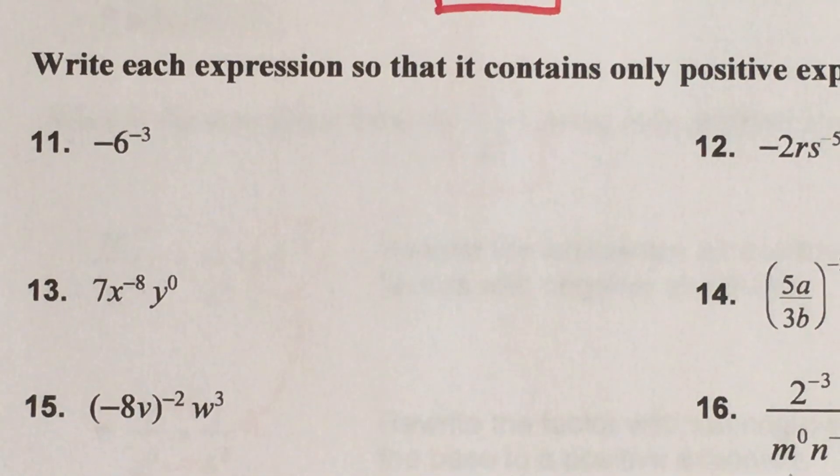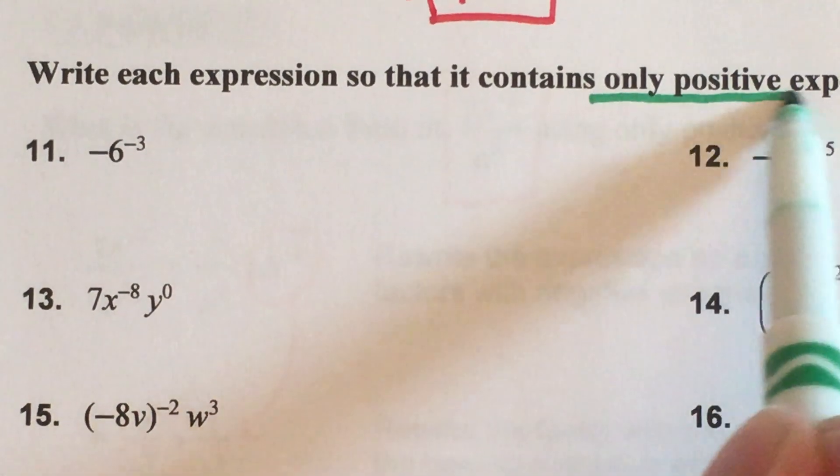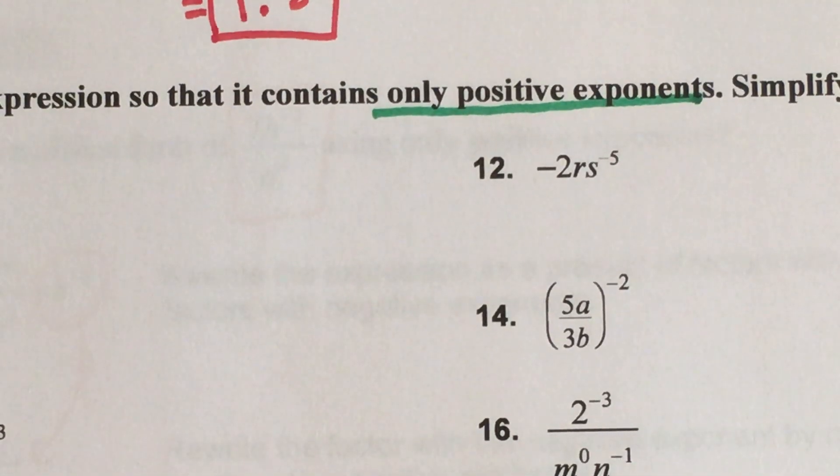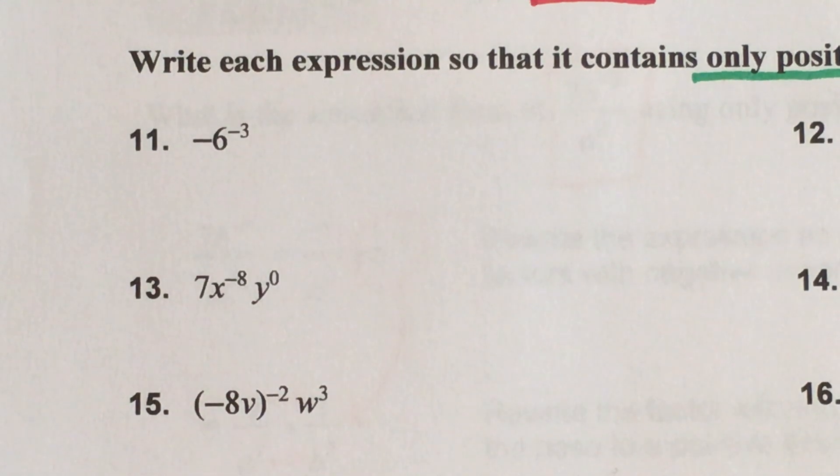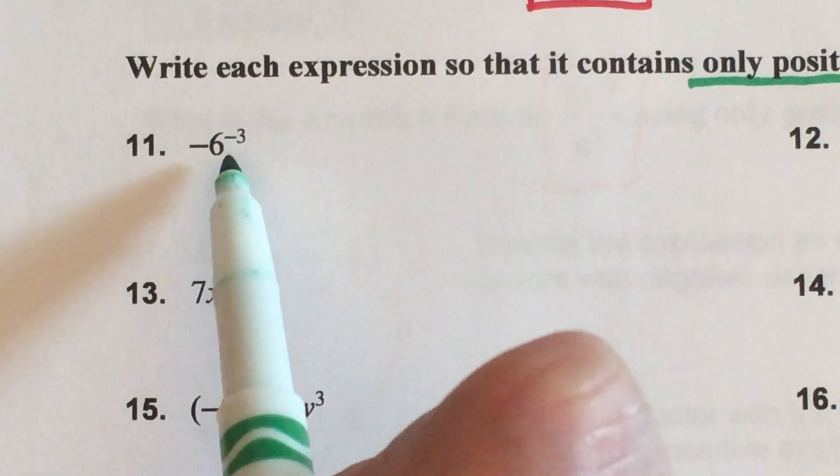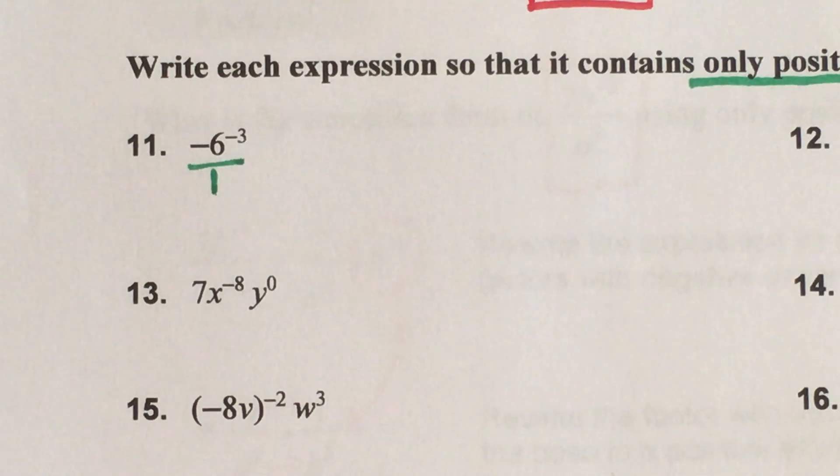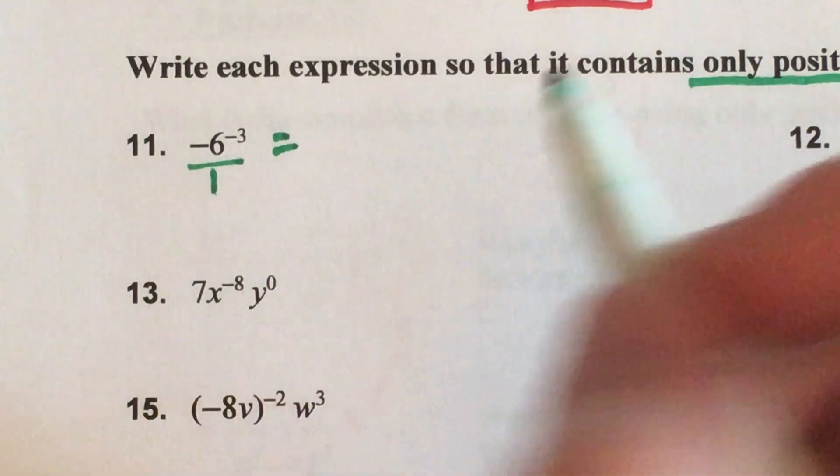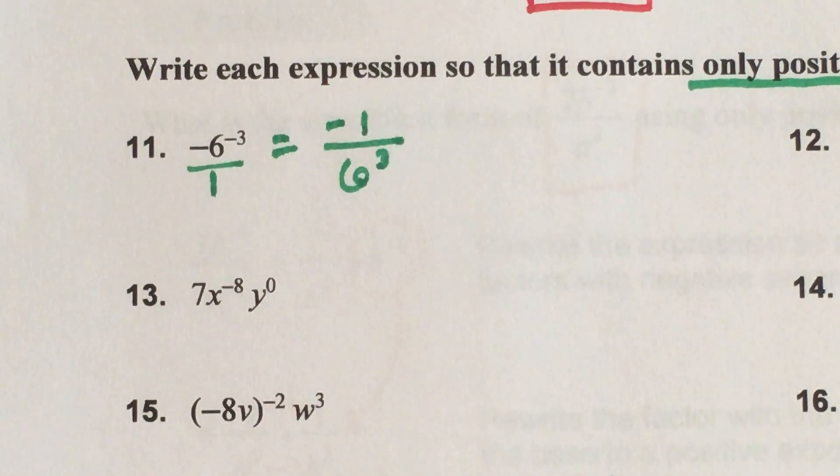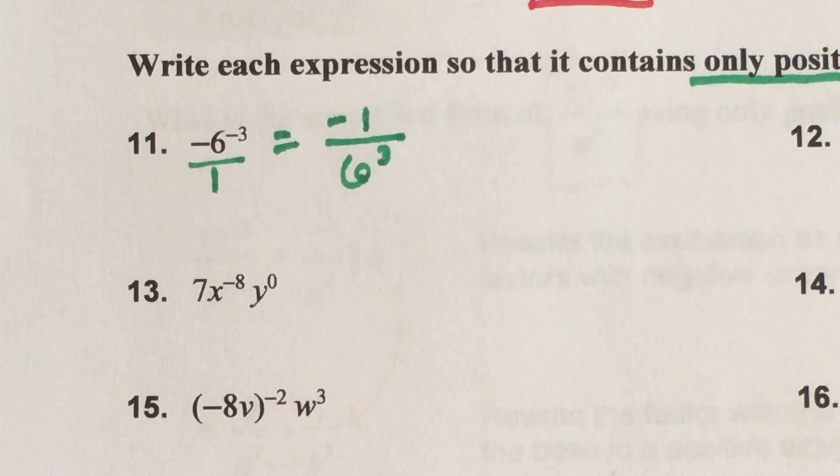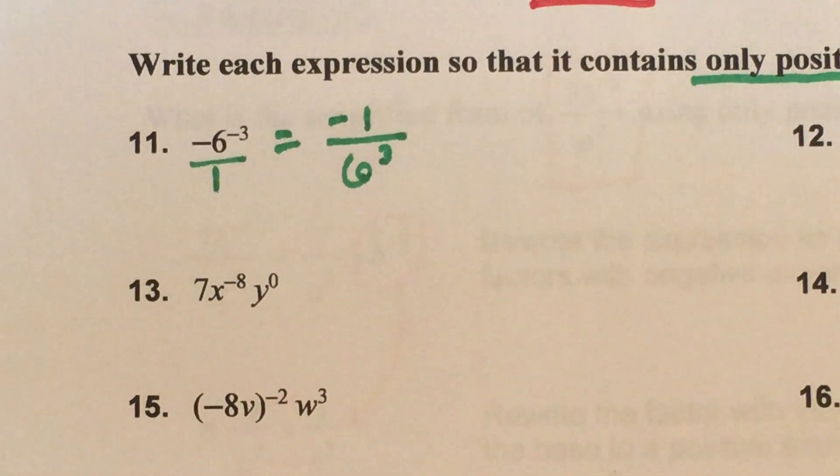Let's look at number 11. We need to write the expression so that it only contains positive exponents. We're going to simplify also if possible. In problem number 11, we know that negative exponents tell us to take the reciprocal of our base. So my six already is negative and it's going to continue to be a negative fraction. Some people ask me why is the negative up there on the top instead of down with the six?